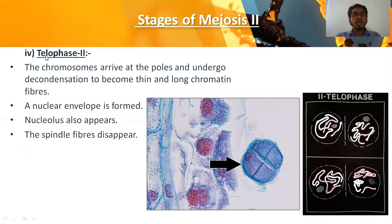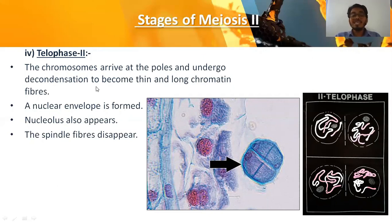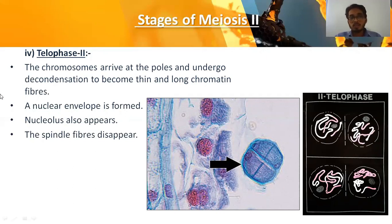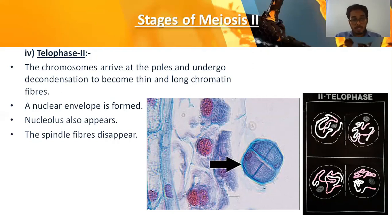In telophase two, the chromosomes arrive at the poles and undergo decondensation — they uncoil, which is also called decondensation, and become a long chromatin fiber or chromatin network. In this stage, the nucleolus and nuclear membrane begin to reappear slowly, and the spindle fibers that were present during cell division disappear.